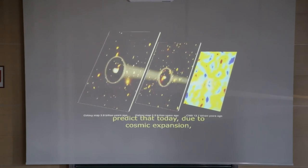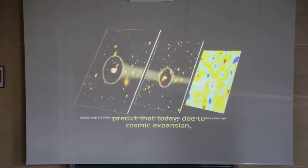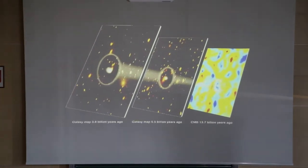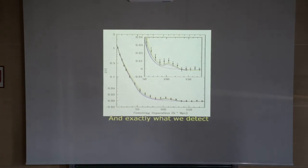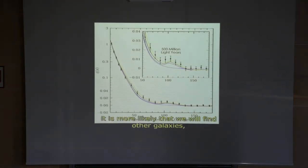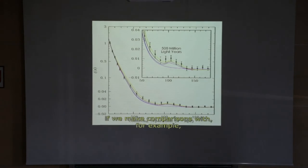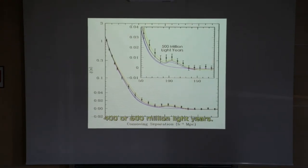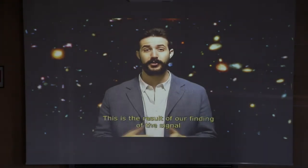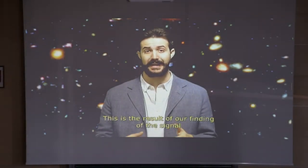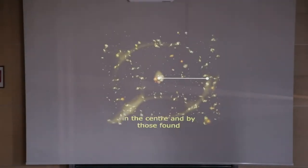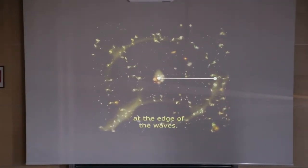Baryonic acoustic oscillations predict that today, due to cosmic expansion, these frozen waves should have a radius of about 500 million light years. And what we precisely detect is that at that distance from a given galaxy, it is more probable to find other galaxies, compared to distances of 400 or 600 million light years. This is a consequence of finding the signal produced simultaneously by galaxies at the center and at the border of these waves.